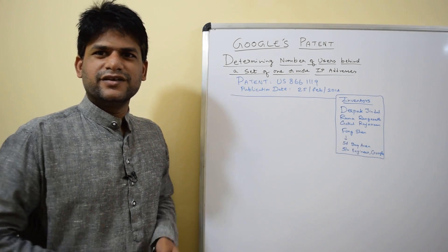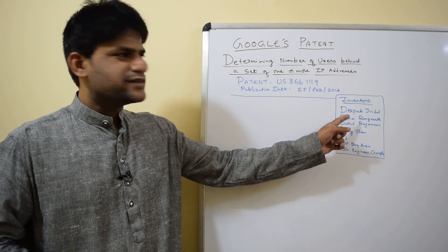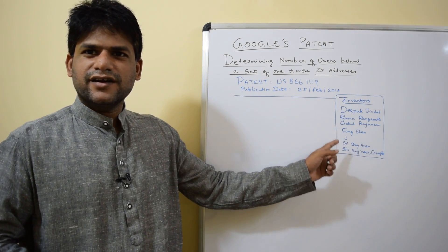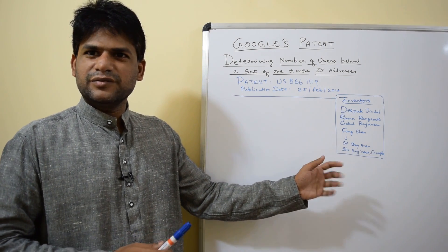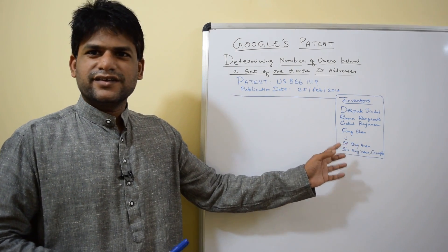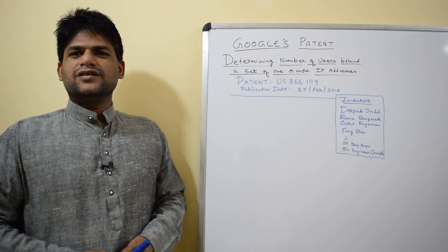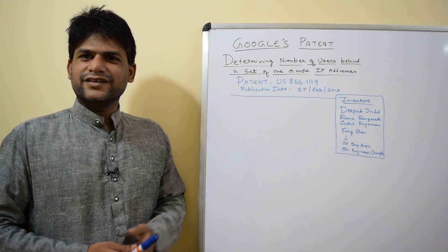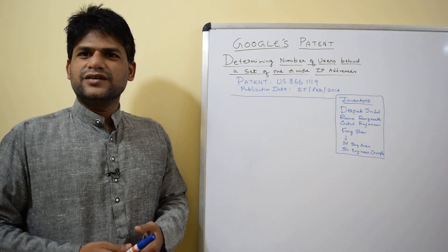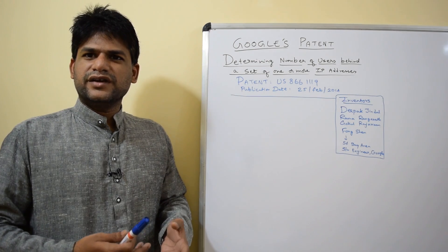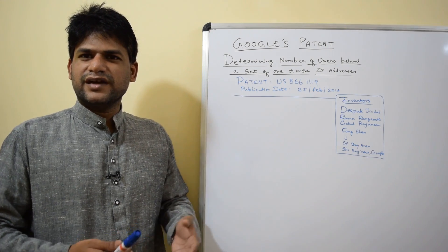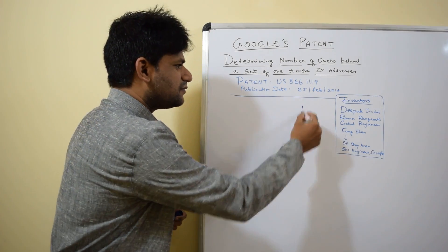I listed all the details on my whiteboard. It has been invented by Deepak Jindal, Ramaranganath, Gokul Rajaram, and another Asian - I'm not sure about his origin, he may be Chinese or Korean - his name is A Function. I discovered he's from SF Bay Area and works at Google. The patent describes how Google analyzes the number of users behind one or more IP addresses.